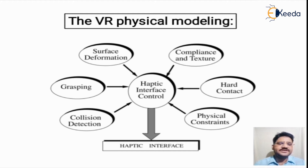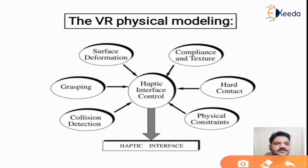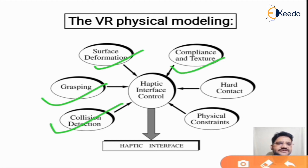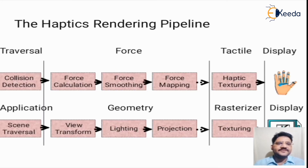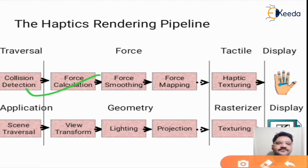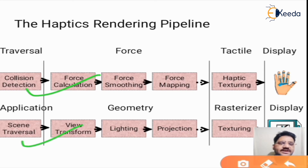The virtual reality physical modeling consists of the following stages: collision detection, grasping, surface deformation, compliance and textures, hard contact, and physical constraints. These stages work in haptic environments and use haptic feedback.